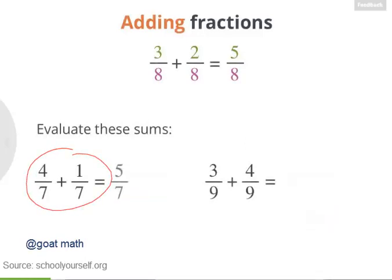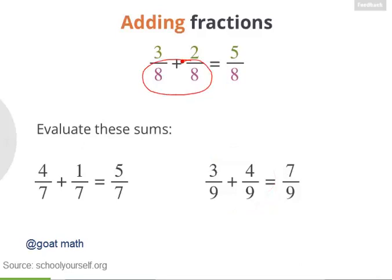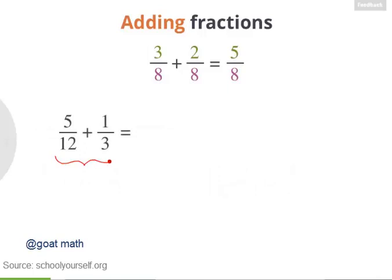Right. This sum is 5 sevenths, and this sum is 7 ninths. So, whenever you have fractions with matching denominators, you can add them together by keeping the denominator and adding their numerators. But what happens if you're adding fractions that have different denominators, like 5 twelfths plus 1 third? What do you do?